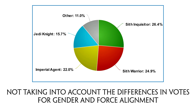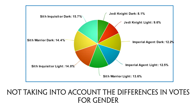Let's move on to the second chart. This one is rather interesting — it takes into account both the class and the alignment votes, but discards the difference in gender votes. What surprised me here is how balanced the results are for all classes. The difference between Light and Dark Side is less than 2% in every case, and for the Imperial Agent especially, the results are nearly identical.